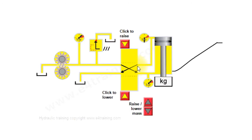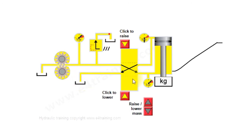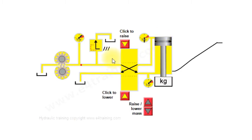It comes out of the top so we've got zero pressure on the top because it's connected with the reservoir, and we've got maximum pressure on the bottom because now the cylinder can't move — there's nowhere for the fluid to go again. This is what we need our pressure relief valve for.